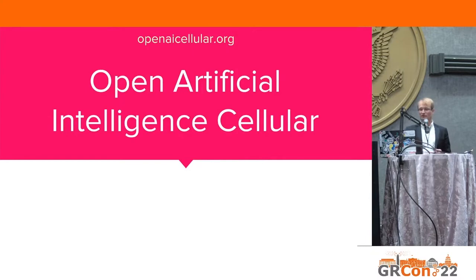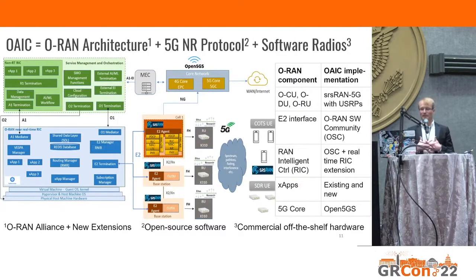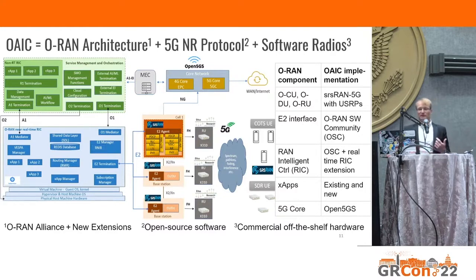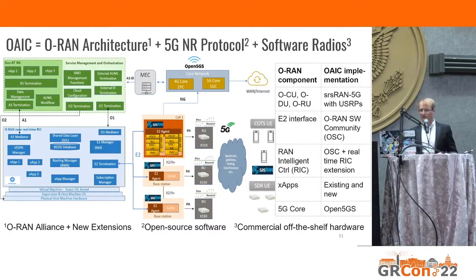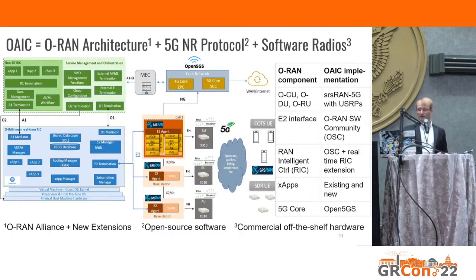Let me talk about our project called Open Artificial Intelligence Cellular. We want to use software radios and open-source software that implements the RAN — 4G, 5G, and next-G — and integrate the ORAN framework around it so we can have non-real-time, near-real-time, and possibly real-time control of our RAN employing artificial intelligence. We use standard open-source software, research USRPs, and leverage the ORAN Alliance specifications to do it right and compatible with others.